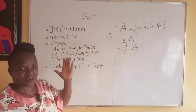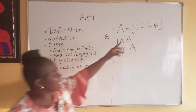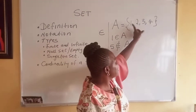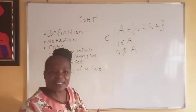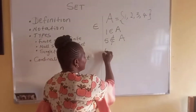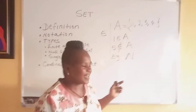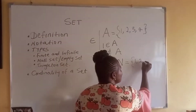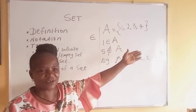Now let's look at the types. We have finite sets and infinite sets. This particular set A here is finite because the elements of the set can be exhausted. Any set whose elements cannot be exhausted is infinite. For example, {1, 2, 3, ...} — it is infinite. We cannot exhaust it.